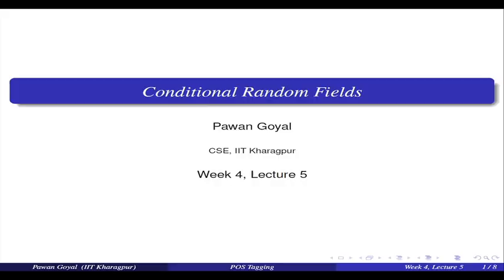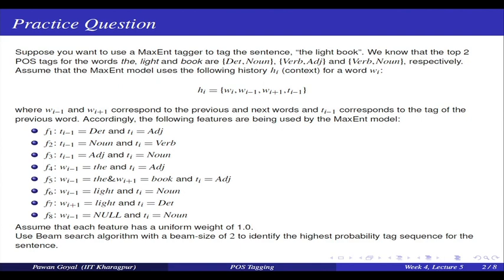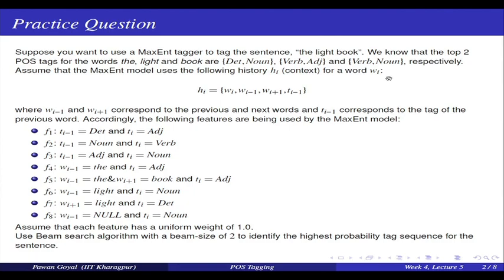Starting with a practice question. We have the sentence 'the light book,' and for all three words the top two tags are: determiner and noun for 'the', verb and adjective for 'light', and verb and noun for 'book'. We want to use our MEMM model, where for a given word w_i the context is the previous word, the next word, and the tag given to the previous word. All features are defined over this context. Eight different features are given, and we use the beam search algorithm to find the appropriate tag sequence.